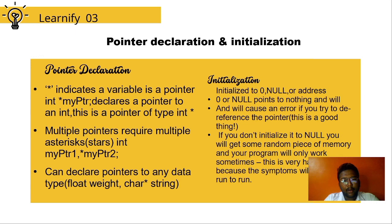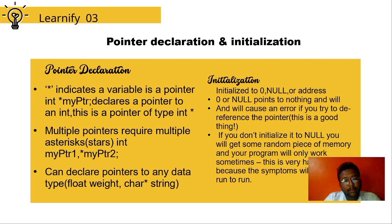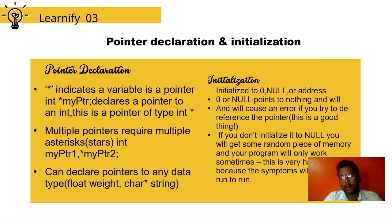Coming to pointer declaration and initialization: an asterisk indicates that a variable is a pointer. For example, int *myPtr declares a pointer to an integer. Multiple pointers require multiple asterisks. For instance, in int myPtr1, *myPtr2 — myPtr1 is a regular variable, and myPtr2 stores the address of myPtr1 because it is declared with an asterisk.